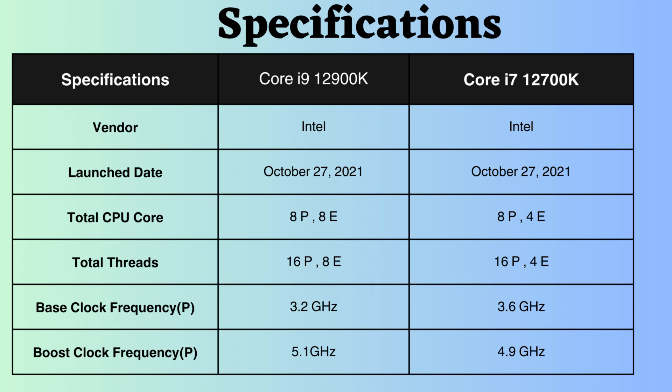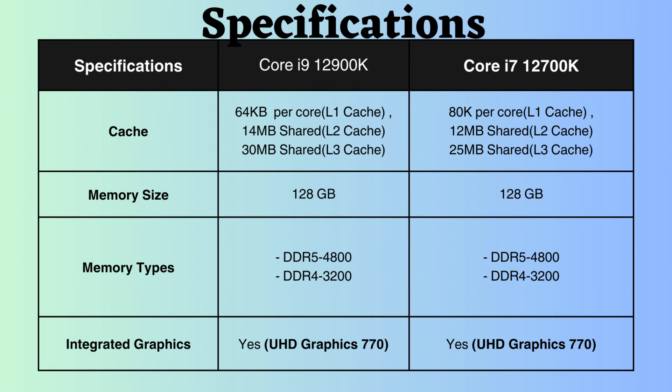For the performance cores, the base clock frequency of the Core i9-12900K is 3.2 GHz, whereas that of the Core i7-12700K is 3.6 GHz. In terms of boost clock frequency for the performance cores, the Core i9-12900K reaches 5.1 GHz, while the Core i7-12700K peaks at 4.9 GHz. With a higher boost frequency, the Core i9 can deliver superior performance, especially under heavy CPU loads.